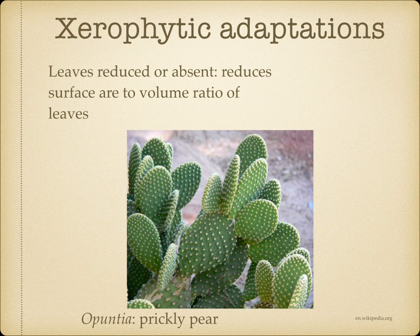Leaves reduced or absent — this reduces the surface area to volume ratio of the leaves. Having leaves that are small and roughly circular in cross-section, as in this plant, rather than broad and flat, reduces water loss. This reduction in surface area must always be balanced against the need for sufficient area for photosynthesis to meet the needs of the plant.